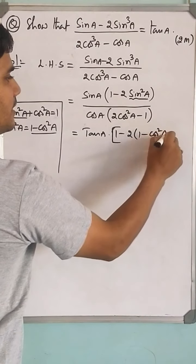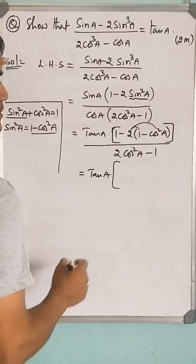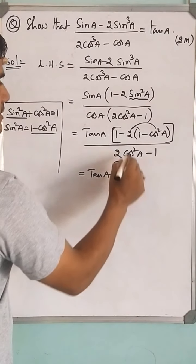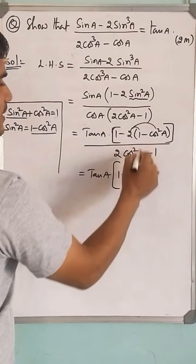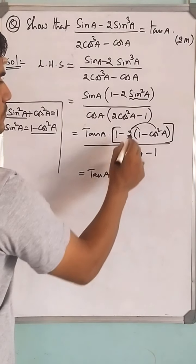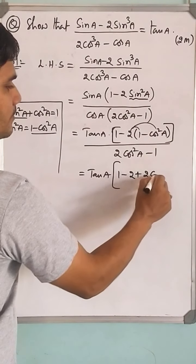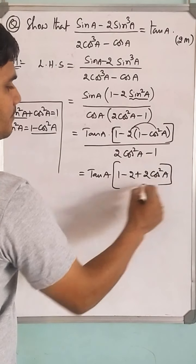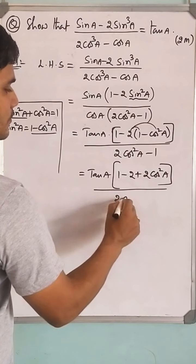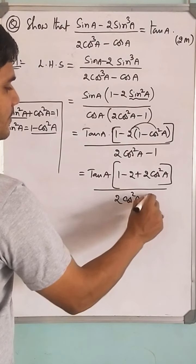Let us eliminate this bracket by distribution: 1 - 2(1 - cos²a) = 1 - 2 + 2cos²a divided by 2cos²a - 1.